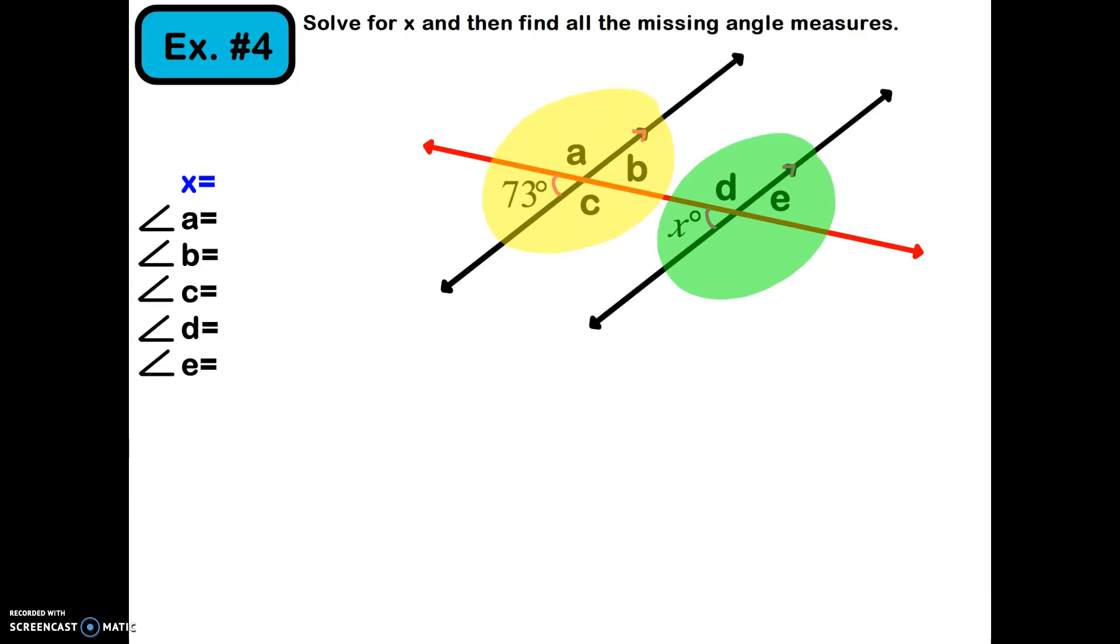Looking at the position of those intersecting lines and where x is in relation to that—x is here in the bottom left in the yellow. 73 degrees is also in the bottom left. That means those two angles are corresponding—they're in the same spot in both sets of intersecting lines. So what do we know about corresponding angles? Corresponding angles are congruent.